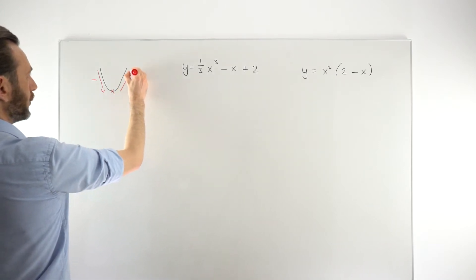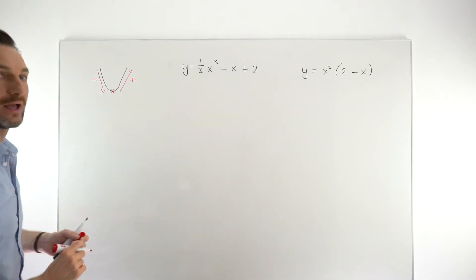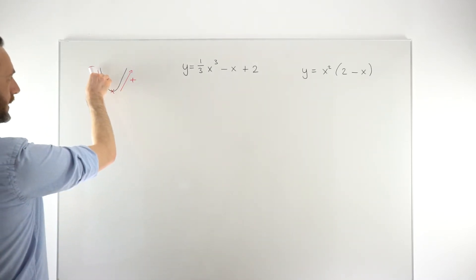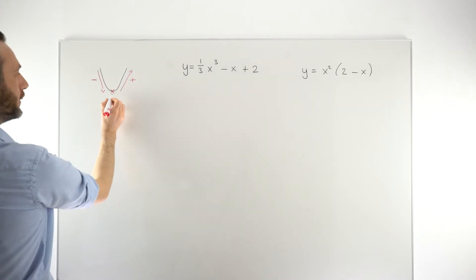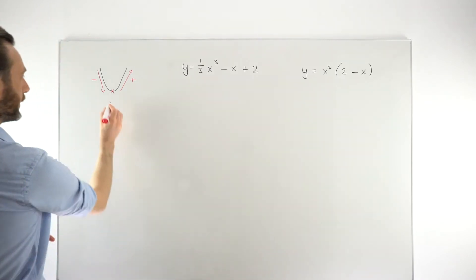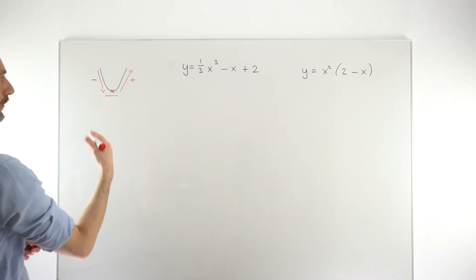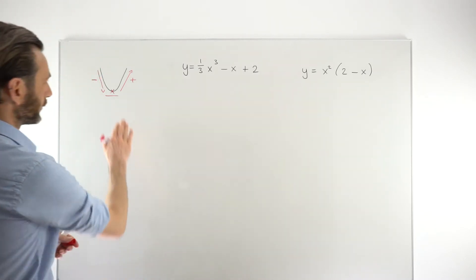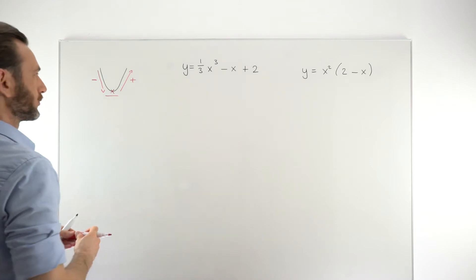Over here, you've got the function sloping up — positive gradients on the tangent lines. So here we say the function is decreasing, and here we say the function is increasing. But at this point, we say the function is stationary. At this point, the derivative of the function is zero — the gradient of the tangent line is zero.